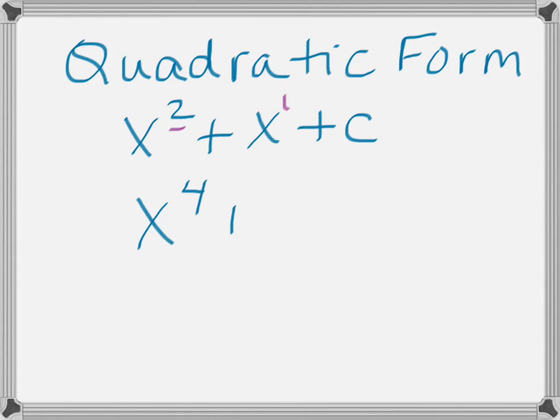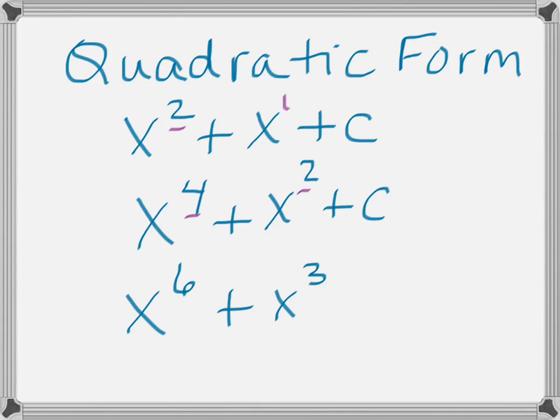Here's another example. Notice the middle term exponent is 2, and the first term exponent is 4 — that's also in quadratic form. We could have x to the 6th, and then our middle term would be x to the 3rd plus c. C in each of these cases represents a rational number.